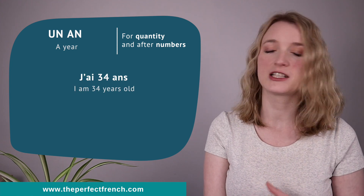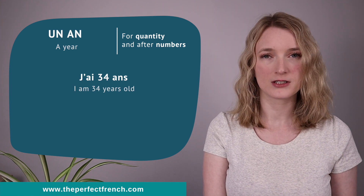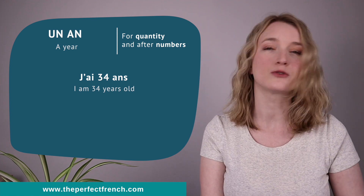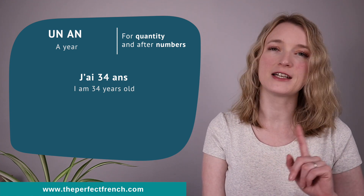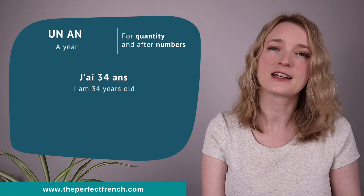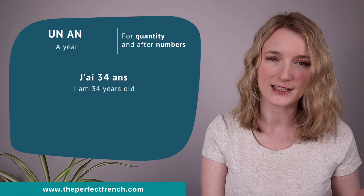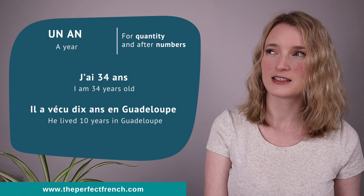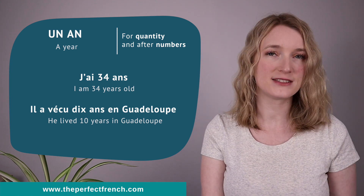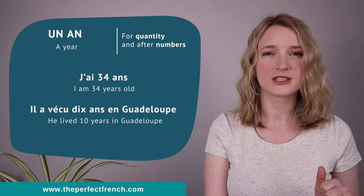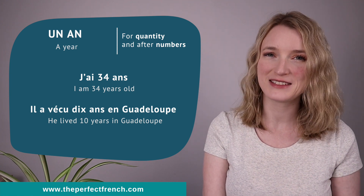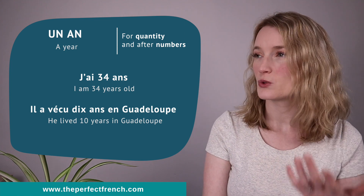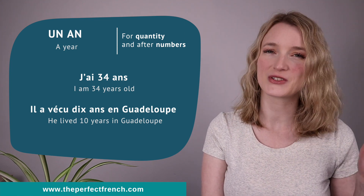For example, j'ai 34 ans. You cannot say j'ai 34 années — it doesn't work. We can also say il a vécu dix ans en Guadeloupe. So here, this is all about quantity and numbers.